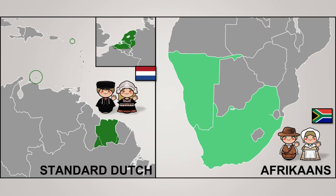Afrikaans is a daughter language of Dutch, mainly spoken in South Africa and Namibia. It is a separate standard language rather than a national variety, unlike Netherlands Dutch, Belgian Dutch, and Surinamese Dutch. An estimated 90–95% of Afrikaans' vocabulary is ultimately of Dutch origin, so there are few lexical differences between the two languages.